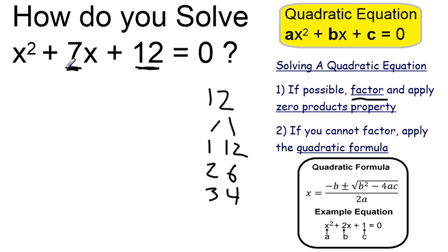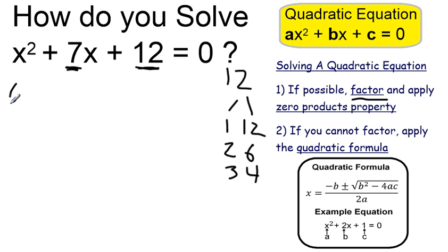So it is factorable. I can rewrite it as a product of one binomial times another. It can be written as x plus 3 and x plus 4. When I multiply them together, I get zero. And you can FOIL to check that if you wanted.